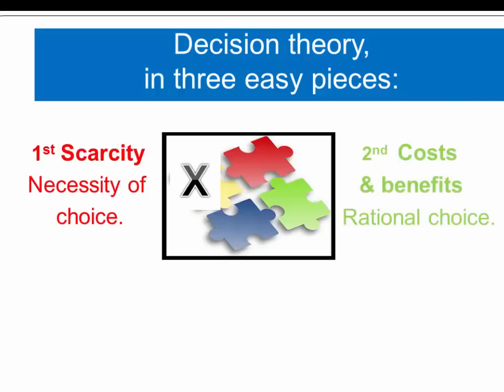The second are costs and benefits, and this is the basis of rational choice that we can weigh the cost and the benefits of our choices.